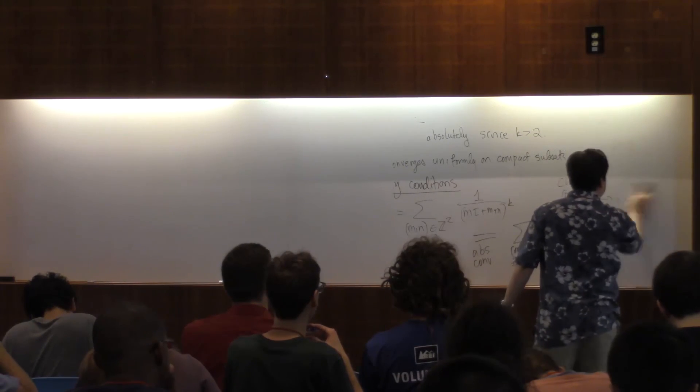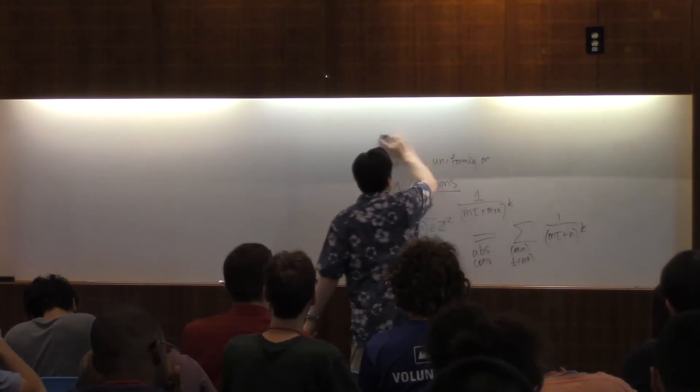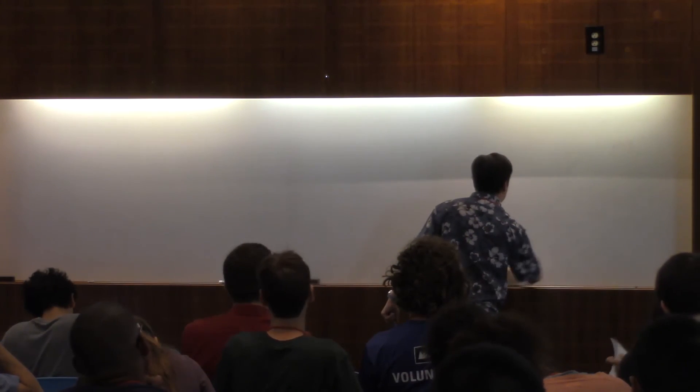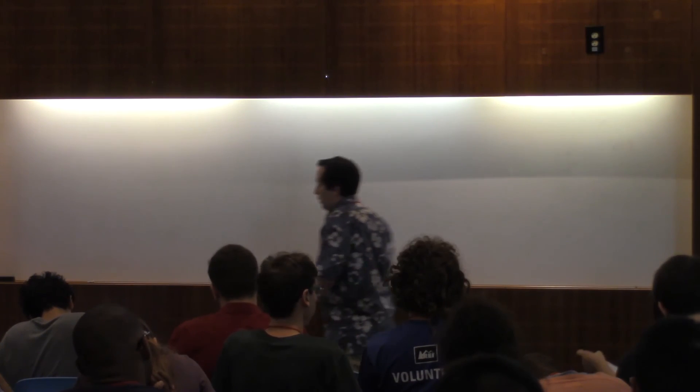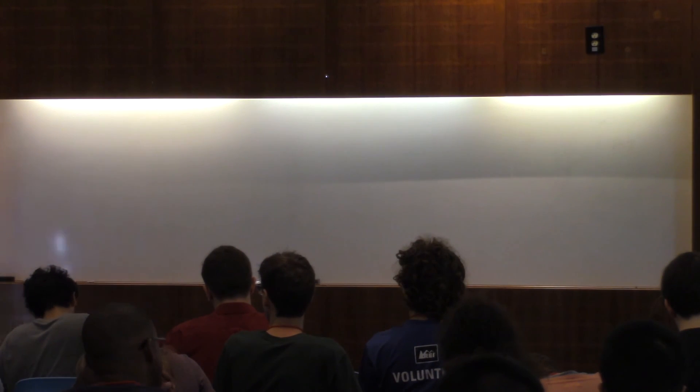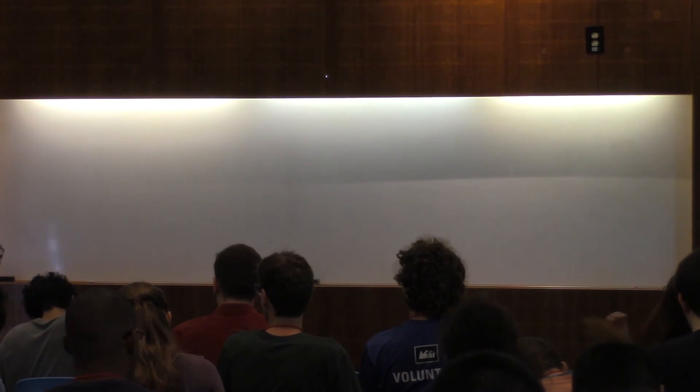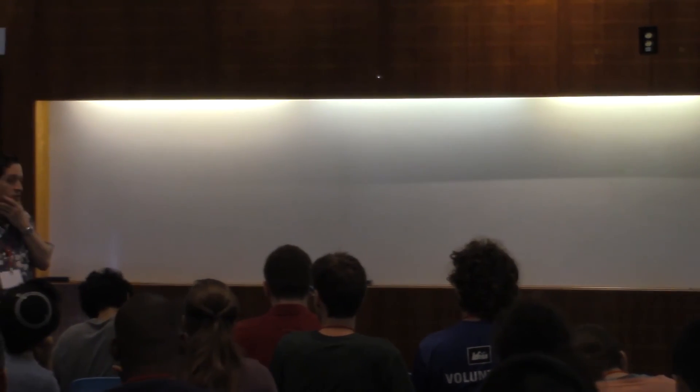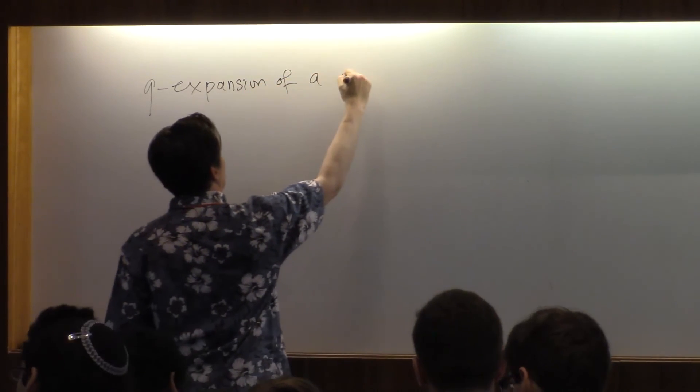The Q expansion of a modular form is also how modular forms show up in combinatorics, physics, partition functions, generating functions, and string theory. Some of these are modular forms and they arise as Q expansions.